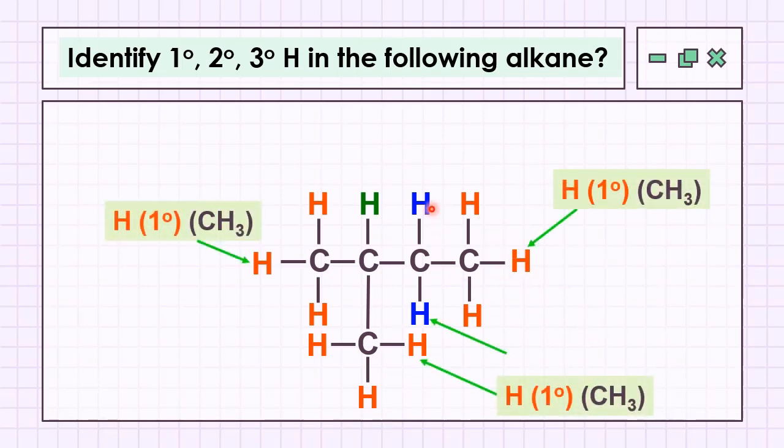And then for the blue one, this carbon bearing the hydrogen in blue directly attached to it has two carbons. Therefore, we have two hydrogens in secondary class.